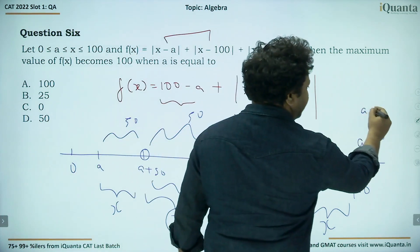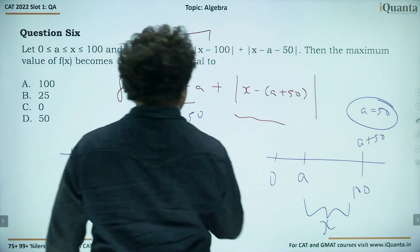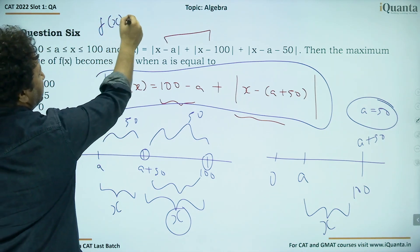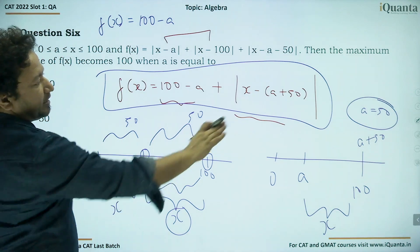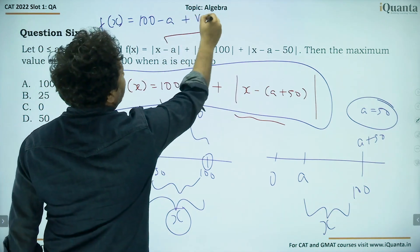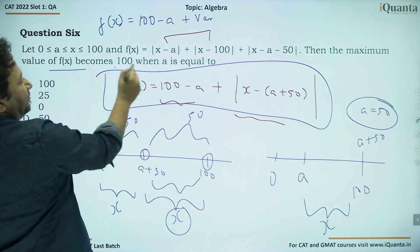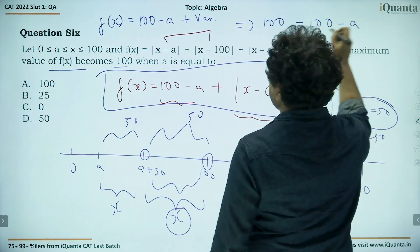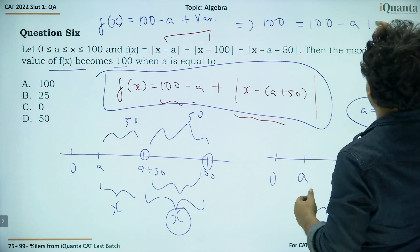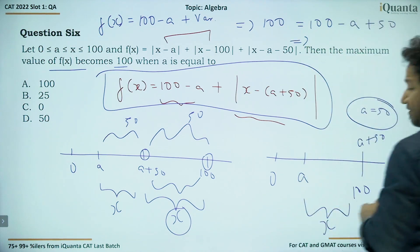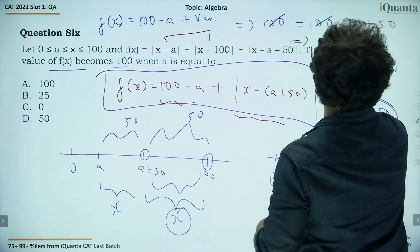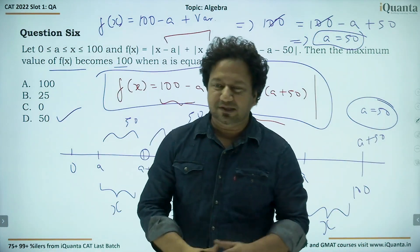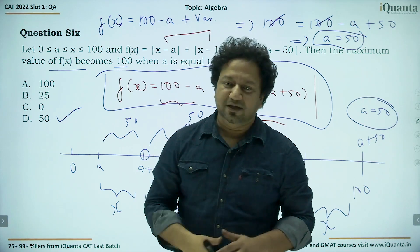So f(x) = (100 − a) + 50 = 150 − a. For the maximum value to be 100, we need 150 − a = 100, giving a = 50. Alternatively confirming: when a = 50, f(x) = 50 + |x − 100|, maximized when x = 50, giving f = 50 + 50 = 100. So the value of a is 50 for which the maximum value of f(x) becomes 100.